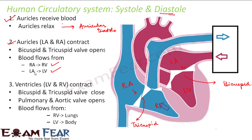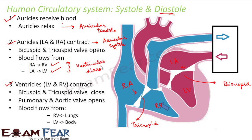At the end of step two, all blood is collected in the left and right ventricles. When the auricles are contracting that is called auricular systole — systole is used for contraction, diastole for relaxation. At the same time, while blood flows from the right auricle to the right ventricle, the ventricles are actually relaxing because they are getting blood. This is called ventricular diastole.